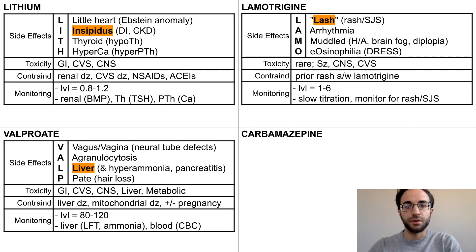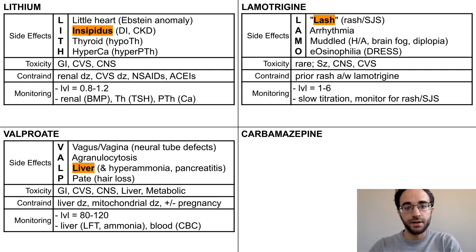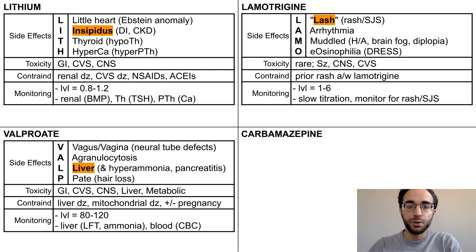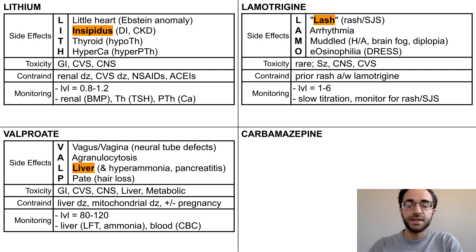Valproate side effects include the teratogenic potential for neural tube defects, which you can remember by 'vagus,' indicating the nerves, and 'vagina,' indicating pregnancy, agranulocytosis, liver toxicity, as well as pancreatitis, and hair loss, which you can remember by 'pate,' meaning a bald head. Similar to lithium, valproate has a narrow therapeutic index of 80 to 120, with potential for toxicity involving the organ systems listed here and necessary monitoring with LFTs and CBCs.